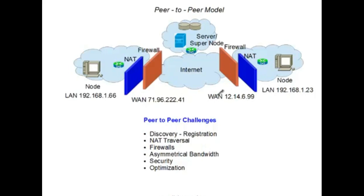So discovery is one of the first challenges — how do you discover the address you need to reach, which would be the WAN address, and how do you go about accessing it? That is generally done with a registration process. The nodes on such a network are generally registered by a server or super node. An application program runs on your host machine and registers with that site, which has a domain name discoverable in the DNS. That's the method whereby you can discover the other nodes.